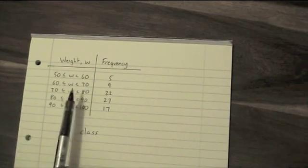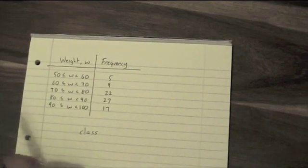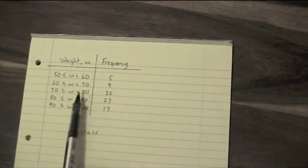This symbol here where you've got a double line at the bottom means less than or equal to. The reason why you have a less than or equal to here and just a less than here is that if you got exactly 60, it would go in the second row. If you got exactly 70, it would go in the third row.